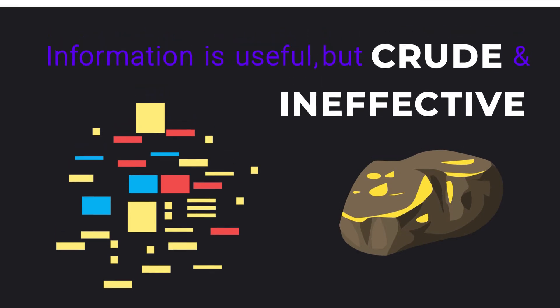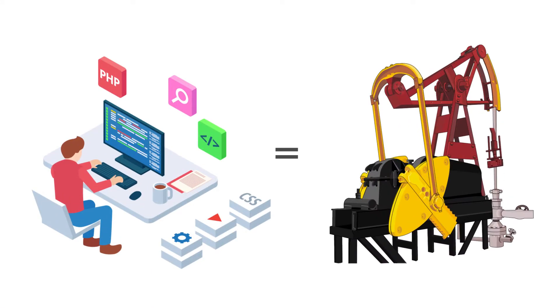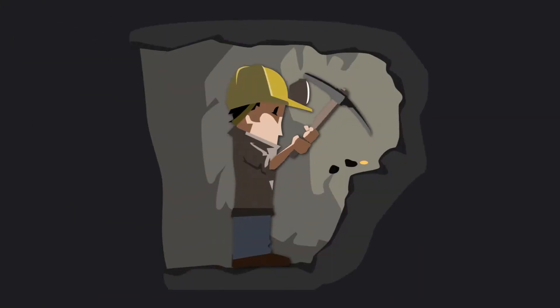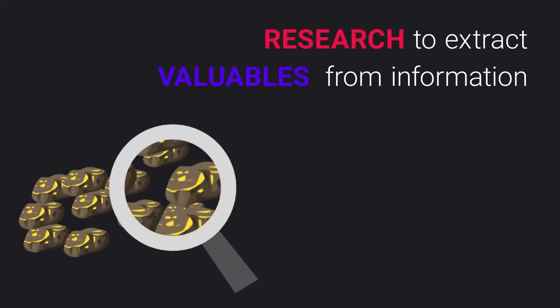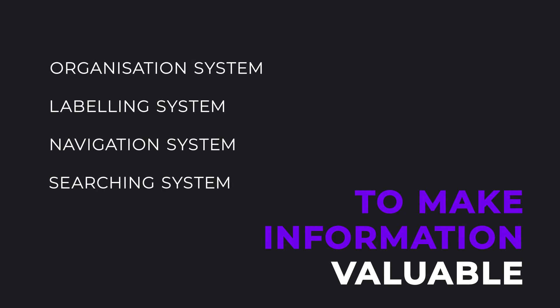During large portions of my teaching career, I used to compare web design and development with the process of extracting gold from its ore. Let us compare information to a metal ore, which we can easily collect if we mine or dig deeper for it. Though collecting information in its crude form is possible by anyone, it requires a researcher's skill to extract the valuables from inside it. So to make this crude information more valuable, we are going to use these four components starting with the organization system first.